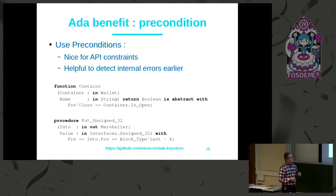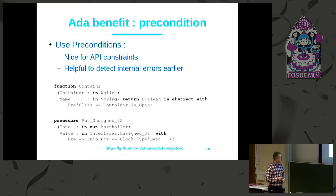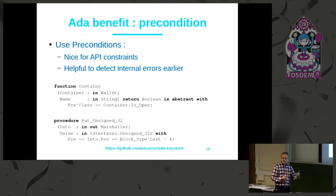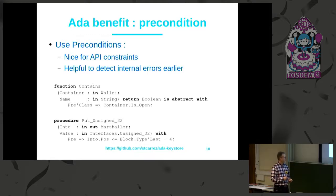I have also used preconditions, which helped me define nice API constraints. For example, I have an operation called Contains, and I can define a precondition that it can only be used if the container is open — you cannot verify that a name is contained in the container if it is locked. Internally, I've also used preconditions to make sure that at various steps when performing an operation, the constraint on the object is verified.